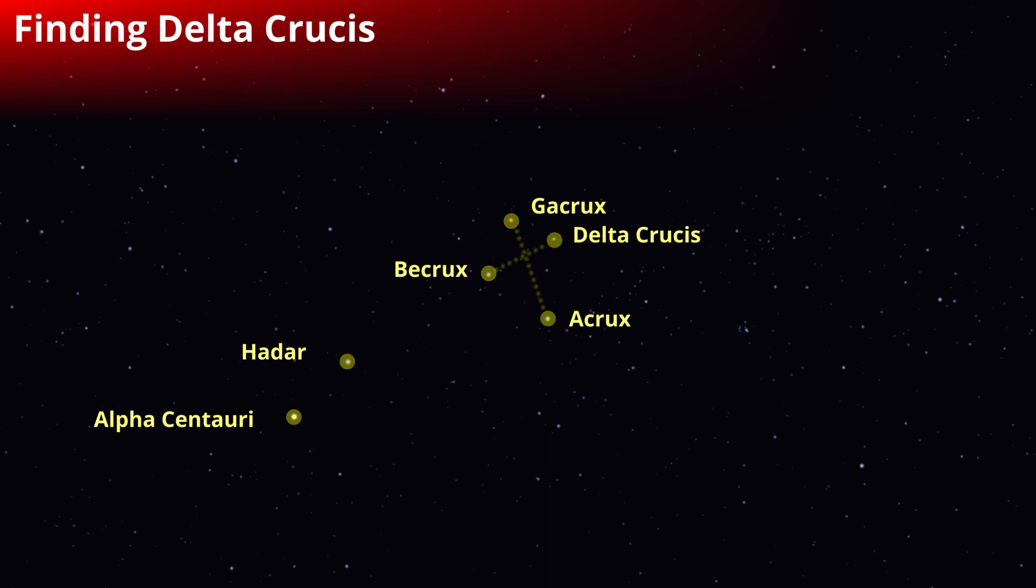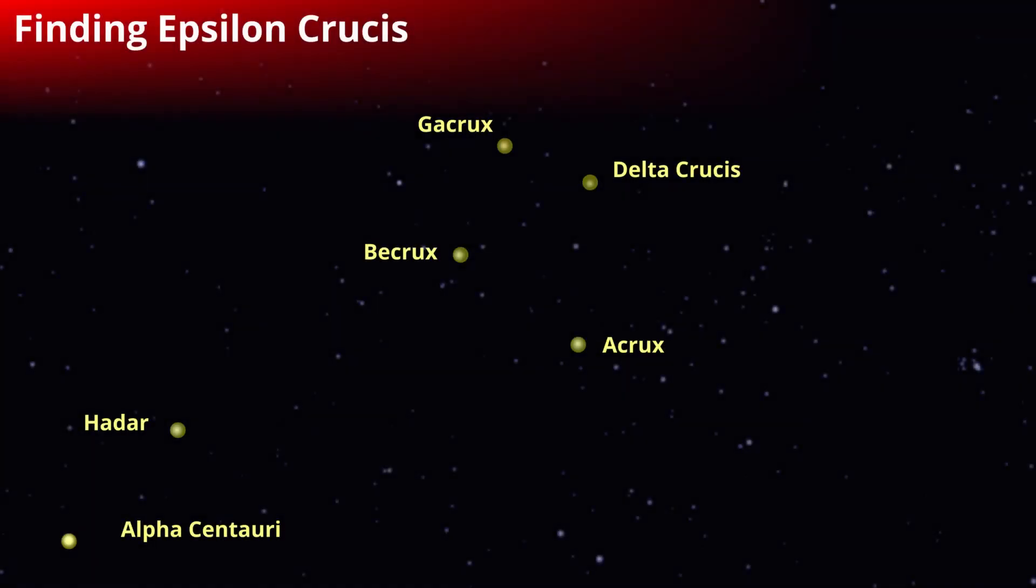There you have it, the Southern Cross. If the viewing conditions are not bad, then you'll probably see another dimmer star between Delta Crucis and A-Crux. That's the star Australia put on their flag, and it's called Epsilon Crucis. So that's how to find the Southern Cross. Good luck and clear skies.